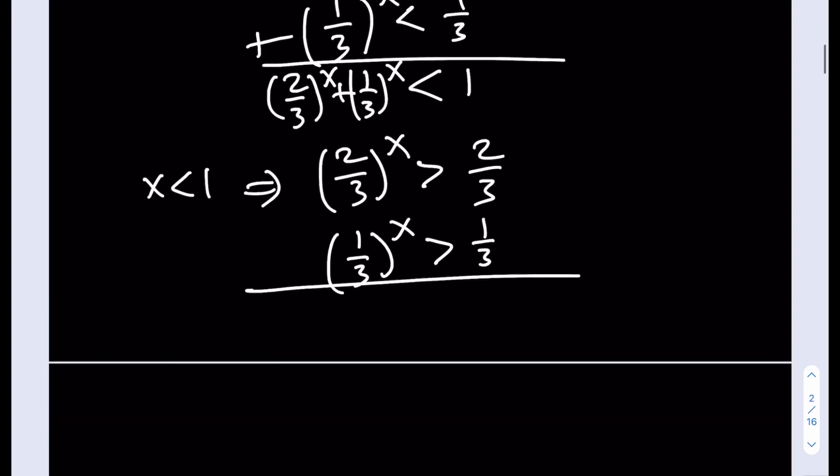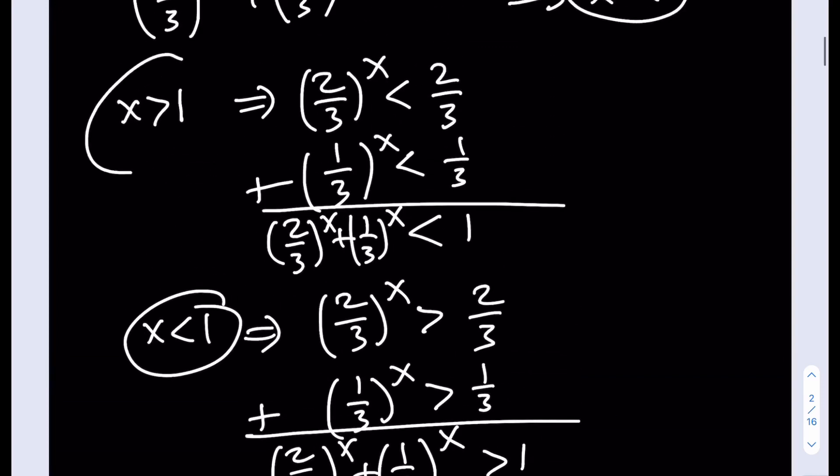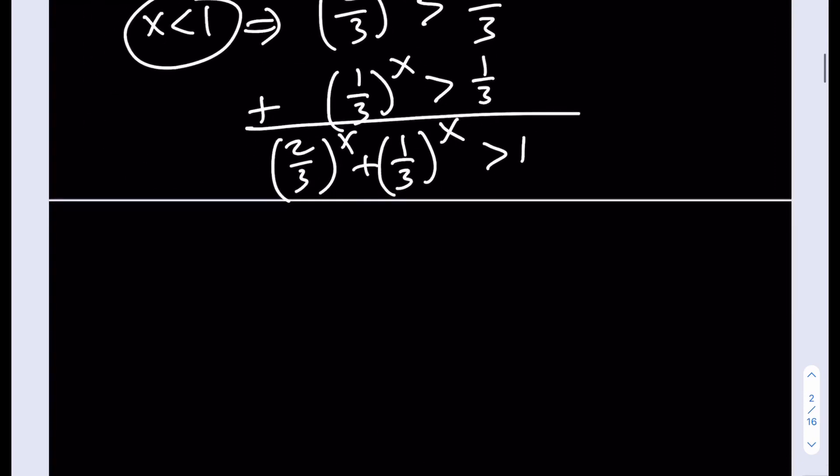And when you add them, their sum is going to be greater than 1. So again, this is not going to work. That means if x is less than 1 or greater than 1, there are no solutions, which means x = 1 is the only solution to this equation.